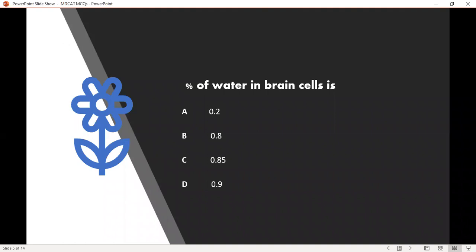The percentage of water in brain cells is option A 0.2%, option B 0.8%, option C 0.85%, and option D is 0.9%. Here, the correct answer is option C 0.85%.